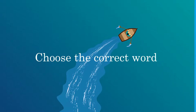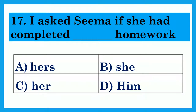Choose the correct word. I asked Seema if she had completed dash homework. Option A: Hers. Option B: She. Option C: Her. Option D: Him. The answer is Option C: Her — I asked Seema if she had finished her homework.